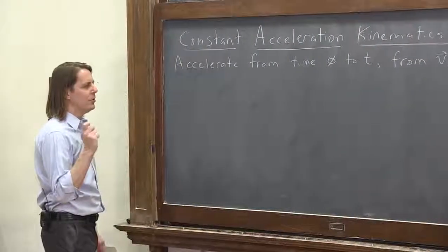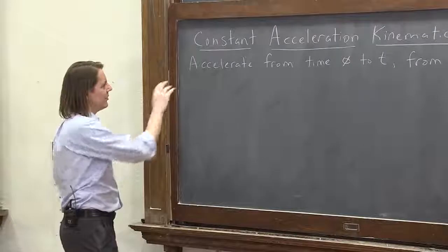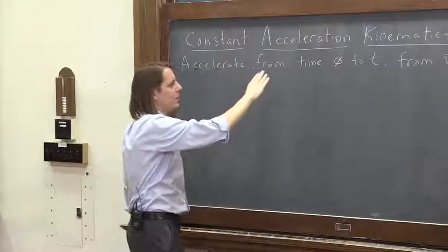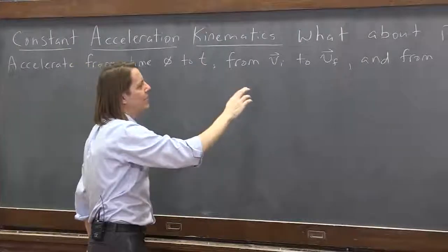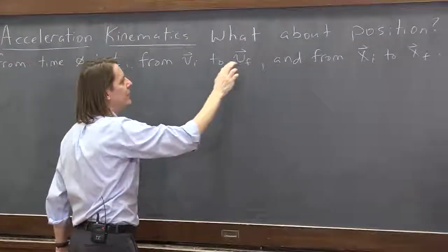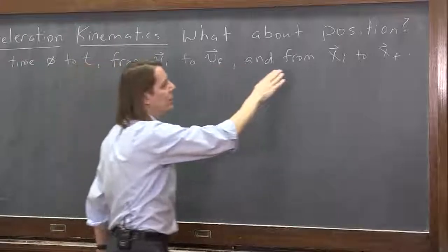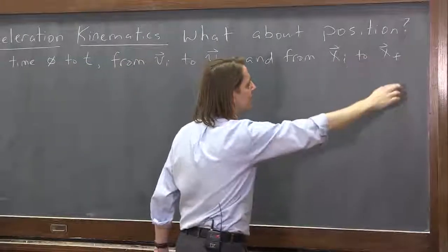So what we're going to do is we're going to derive it for an object that's accelerating, constant acceleration. We're going to look between time 0 and time t. And in that time, it goes from initial velocity to final velocity. We've kind of already done that. But also, it goes from an initial position to a final position.